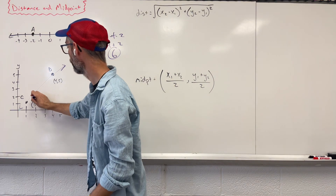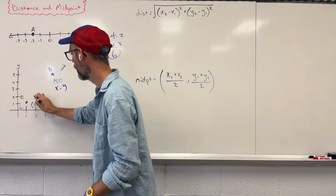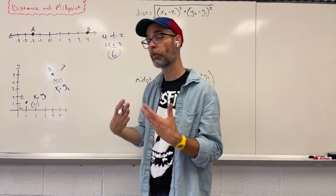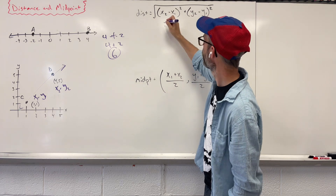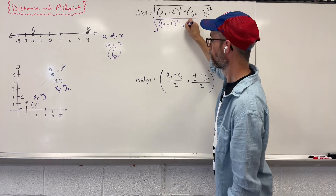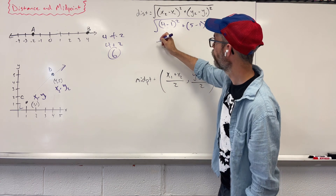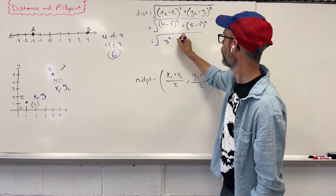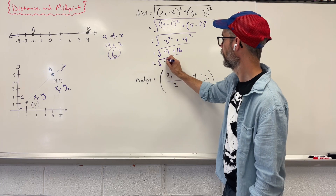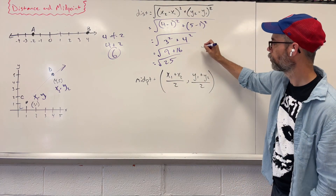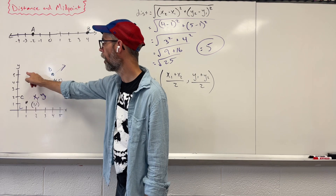Let's label everything first. So you have x, y, x, y — like when dealing with slope in algebra, we label them x1, y1, x2, y2. We're doing the same thing here. Now I want to take those four numbers and just drop them in place. So we are saying the square root of (4 minus 1) squared plus (5 minus 1) squared. And now we just simplify: 3 squared, 4 squared gives us 9 and 16, and 25. When we take the square root of 25, we get a distance of 5. From here to here is 5.